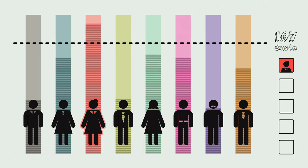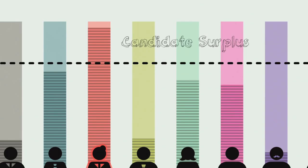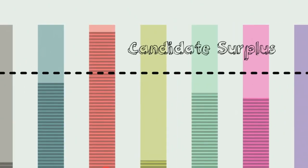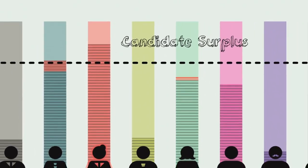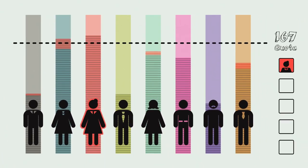But if all the vacancies haven't been filled, we keep counting. If a candidate has received more votes than the quota, the number of votes over the quota is called the candidate's surplus.